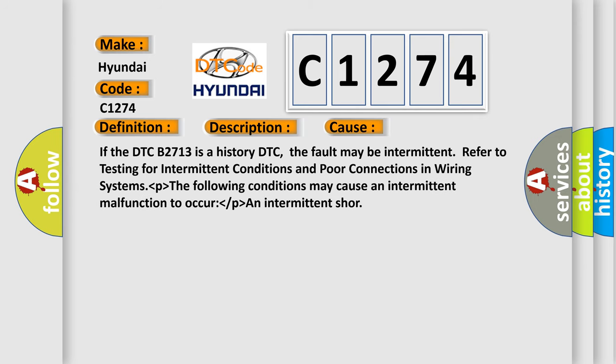This diagnostic error occurs most often in these cases: If the DTC B2713 is a history DTC, the fault may be intermittent. Refer to testing for intermittent conditions and poor connections in wiring systems. The following conditions may cause an intermittent malfunction to occur or an intermittent short.